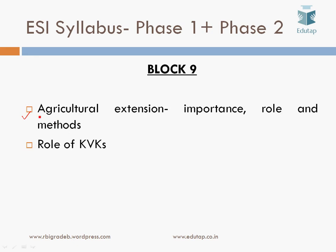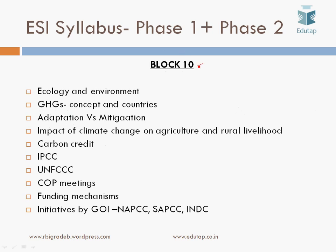Block 9 is on agricultural extension services — their importance, role, methods, and the role of Krishi Vigyan Kendras. Block 10 covers ecology, environment, and climate change: greenhouse gases, adaptation versus mitigation, impact of climate change on agriculture and rural livelihoods, the carbon credit system, IPCC (Intergovernmental Panel on Climate Change), the UN Framework Convention on Climate Change, COP meetings, funding mechanisms, and Government of India initiatives such as the National Action Plan on Climate Change, State Action Plan on Climate Change, and intended nationally determined contributions.